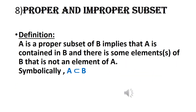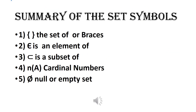Proper and improper subsets: A is a proper subset of B implies that A is contained in B, and there is no element of B that is not an element of A. Symbolically, we write A ⊂ B. Here is a summary of set symbols which you can easily learn from.